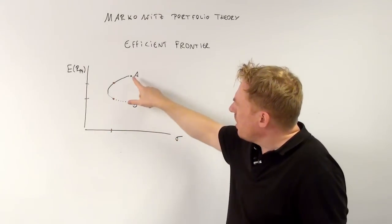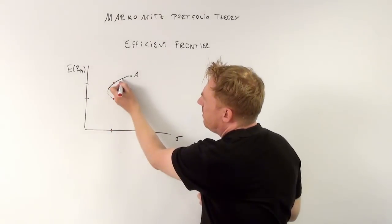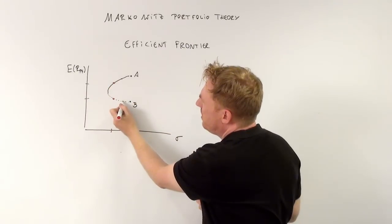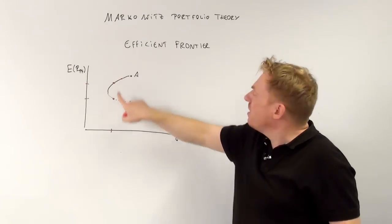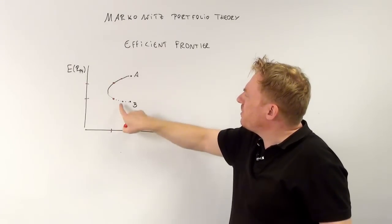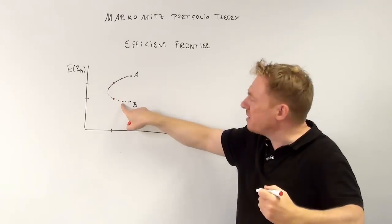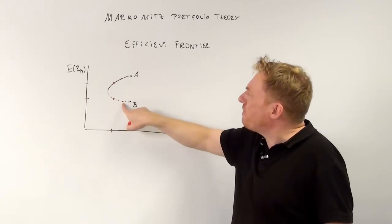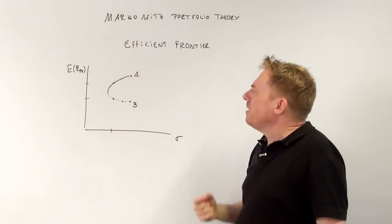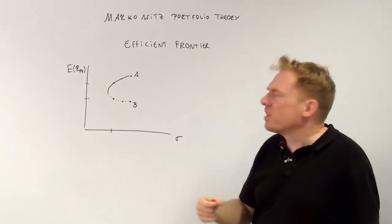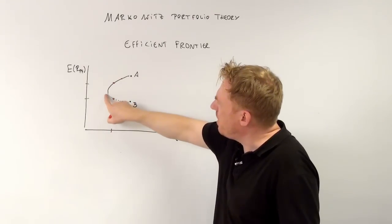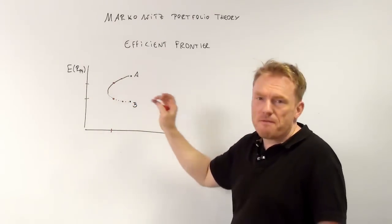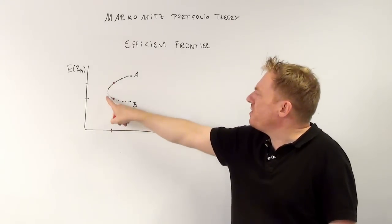And compared here, if we compare these two different points again, we get that this situation is superior to this situation, or put differently, that this situation is inferior to this one. Which means all in all that this line from here to there is the efficient frontier, whereas this is not.